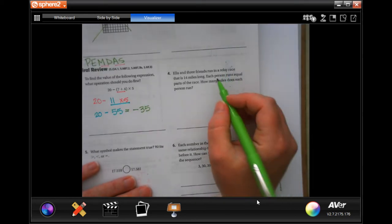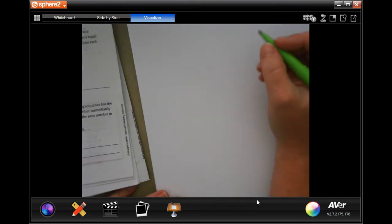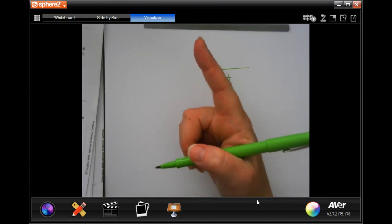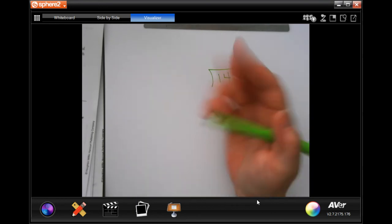Ella and three friends run in a relay race that is 14 miles long. Each person runs an equal part of the race. How many miles does each person run? I'm going to come over here and do it on scrap paper. Now, we know that the total distance is 14 miles. We know that Ella and three friends, that's four people total. That's a mistake people make. It's not just her three friends. It's Ella and her three friends. That's four people.